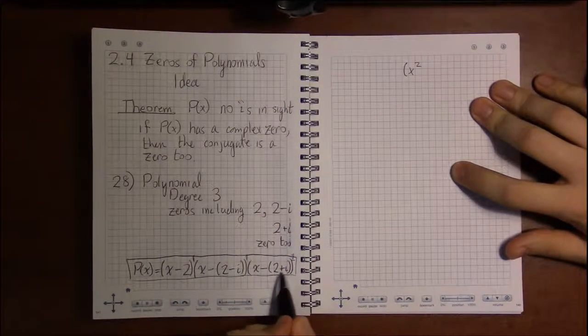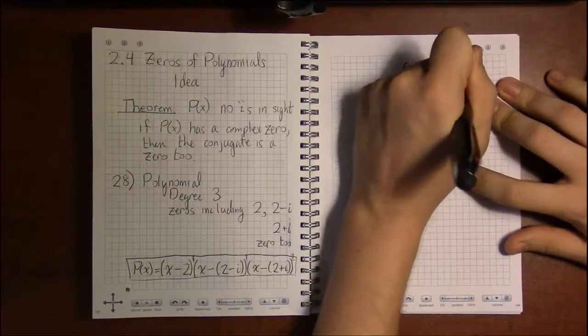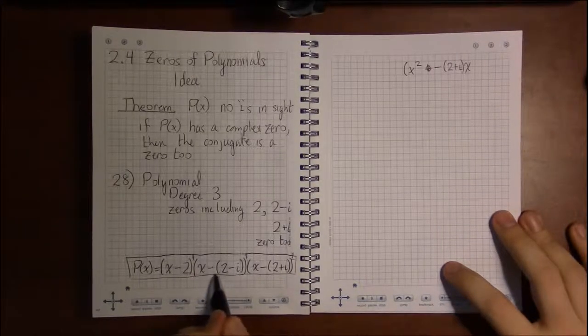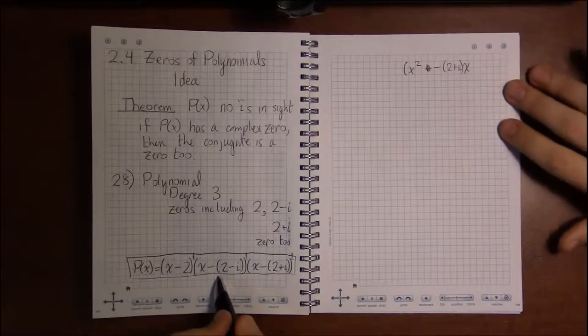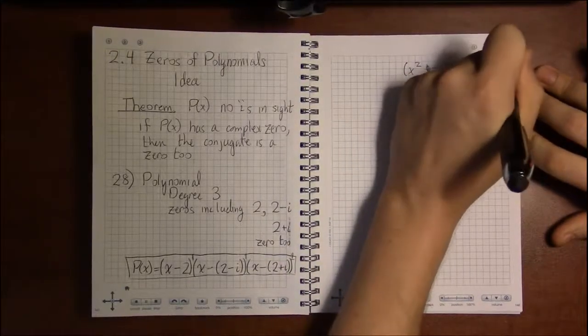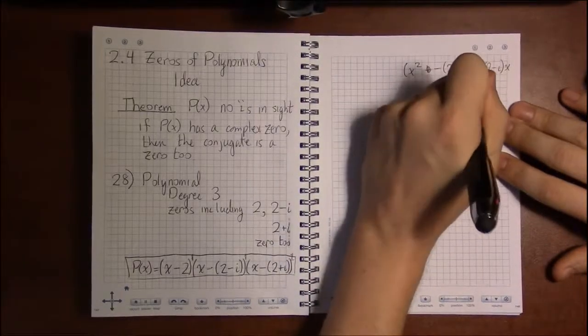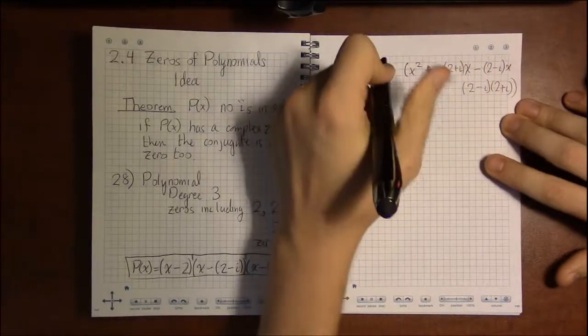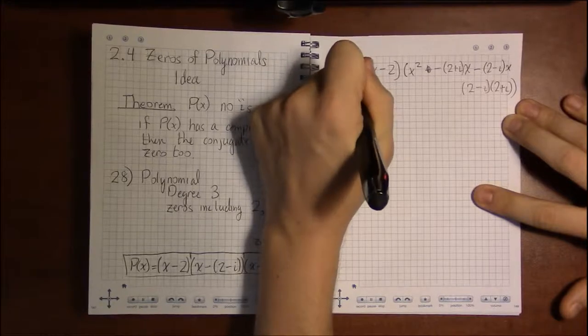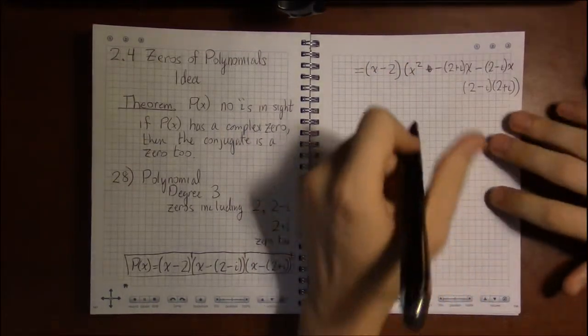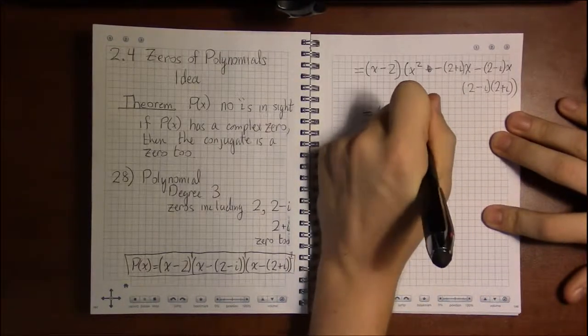I'm going to take x times x, which will be x². x times (2+i) is just going to be -(2+i)x. Now -(2-i) times x—I just take what's in parentheses here, the i's in parentheses, I just take them as one thing—so it's going to be -(2-i)x. And then I'm going to take the two complex numbers and just multiply them together, so (2-i) times (2+i). So there's another FOIL I have to do—I have to FOIL out these two complex numbers.